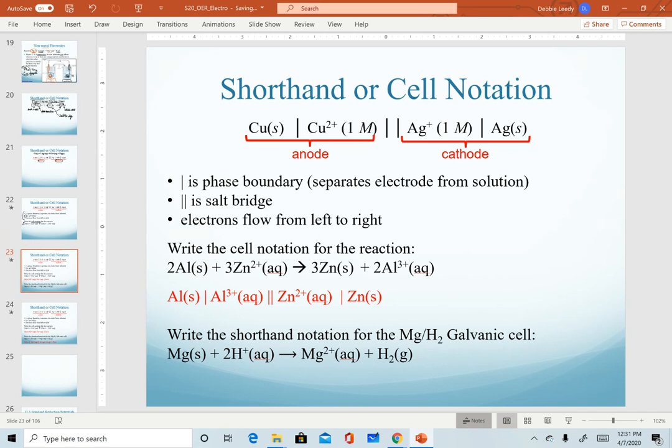All right, I'm going to assume that you paused and that you worked on the solution. So what you should have for your answer is that since aluminum is being oxidized, we start with aluminum solid. Since zinc is being reduced, we end with zinc solid. Single vertical lines to separate the solids from the solutions, and then the double vertical line to illustrate the salt bridge.